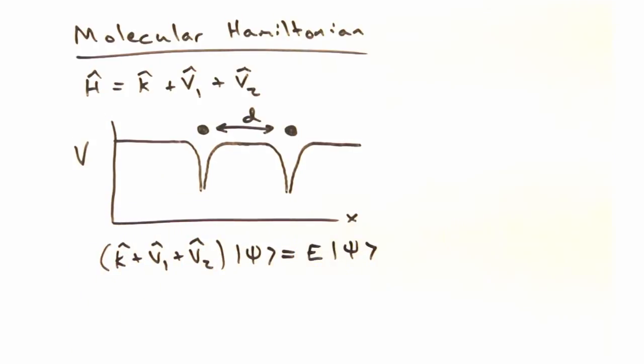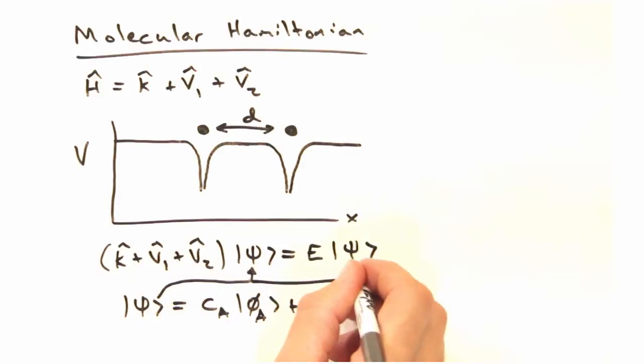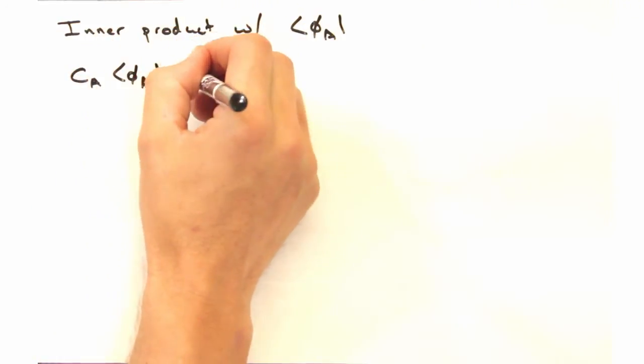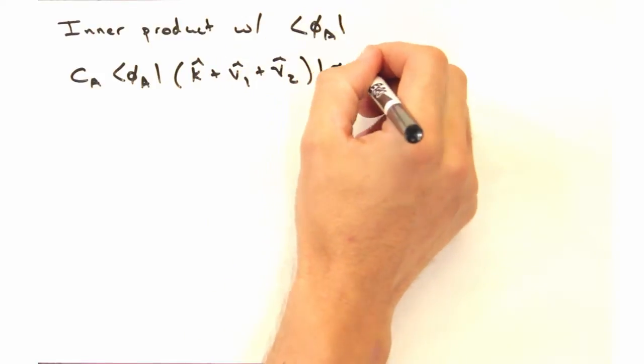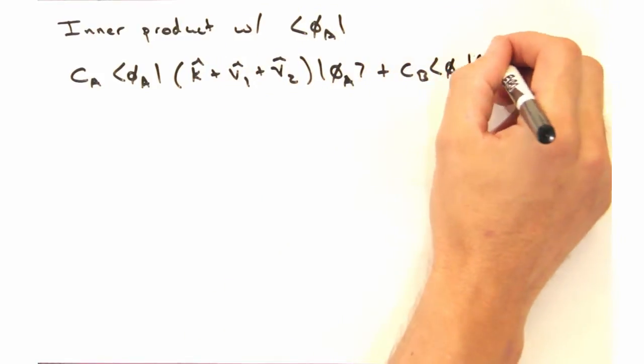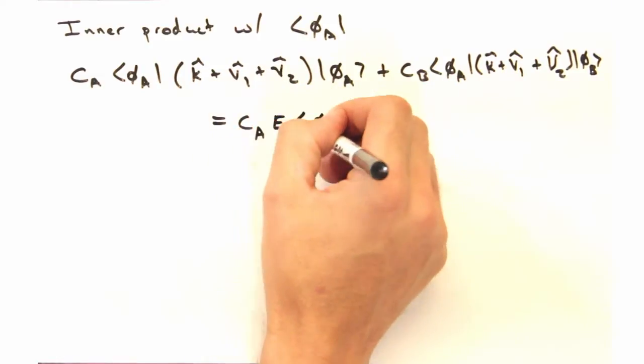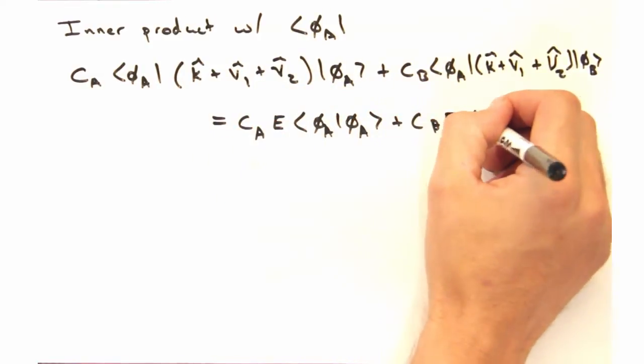Despite these terms being fairly loosely defined at this point, we can still solve for a general expression for the energy of the electron in the molecule. Let's start by putting this expression for psi into the time independent Schrodinger equation. That's a mess. Let's see if we can come up with a way to clean it up. Remember when we took the inner product to find the energy of the electron in the isolated hydrogen atom? Sure. Well,